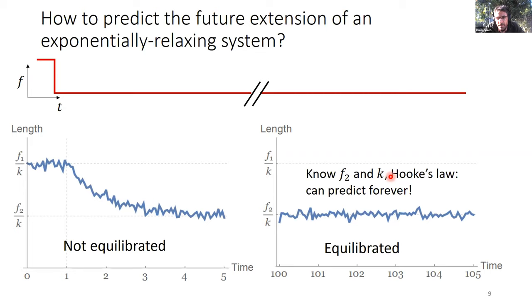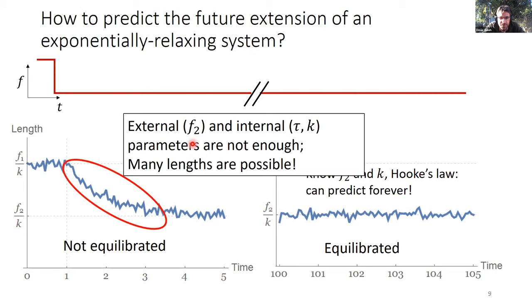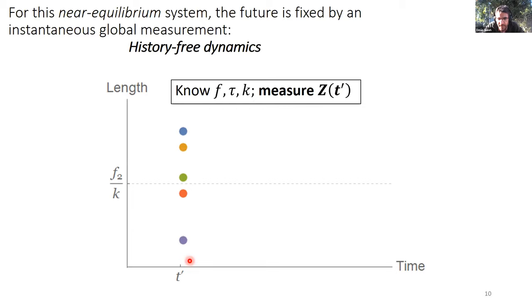The non-equilibrium case is a little bit more subtle, because just knowing the force and the spring constant or even knowing the timescale of relaxation alone is not enough. There's many different lengths that are possible. However, you could argue if you know history, if you know when you jumped force, you could predict this curve. But I'm going to say that there's a way to predict the future here without knowing the history for this system. And the way to predict the future is to collapse the history by doing a measurement. So if at a single time you measure the extension of the system, say you get this blue dot, and you know something about the parameters of the system, then regardless of the history, you know that it is going to decay exponentially towards the equilibrium state. So internal parameters plus one external parameter means that we don't need to know the history. This non-equilibrium system has history-free dynamics.